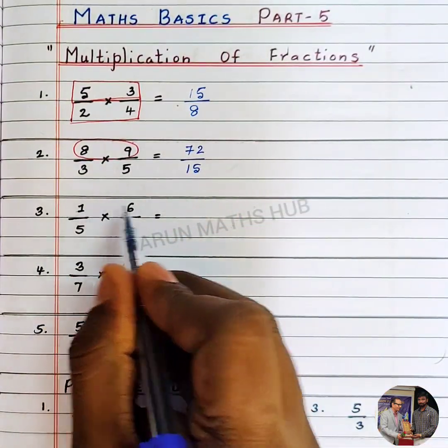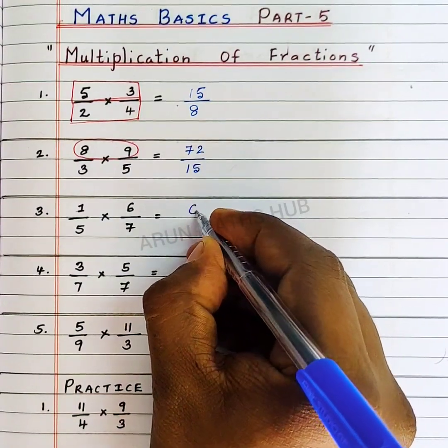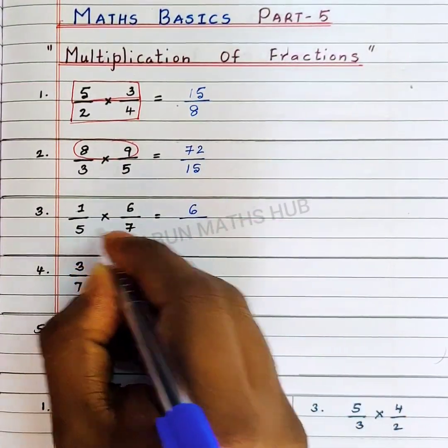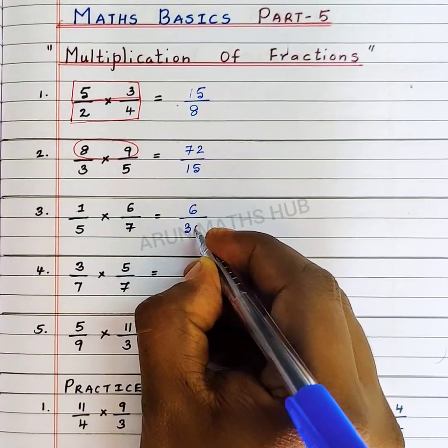And here, 1 into 6 is 6 divided by 5 7s are 35.